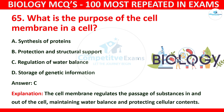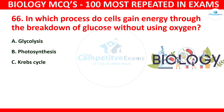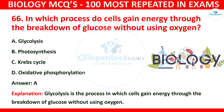Question number 66: In which process do cells gain energy through the breakdown of glucose without using oxygen? The options are glycolysis, photosynthesis, Krebs cycle, or oxidative phosphorylation. The correct answer is A: glycolysis. Glycolysis is the process in which cells gain energy through the breakdown of glucose without using oxygen.